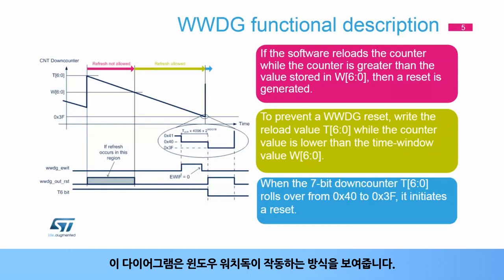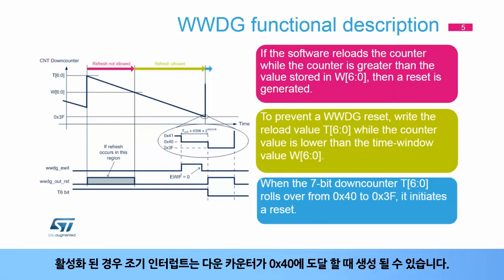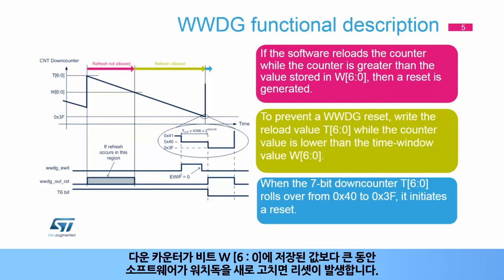This diagram illustrates how the window watchdog operates. When the 7-bit down counter rolls over from 0x40 to 0x3F, it initiates a reset. This happens if the application software does not refresh the window watchdog on time. The early interrupt, if enabled, can be generated when the down counter reaches 0x40. If the software refreshes the watchdog while the down counter is greater than the value stored in bits W[6:0], a reset is generated.